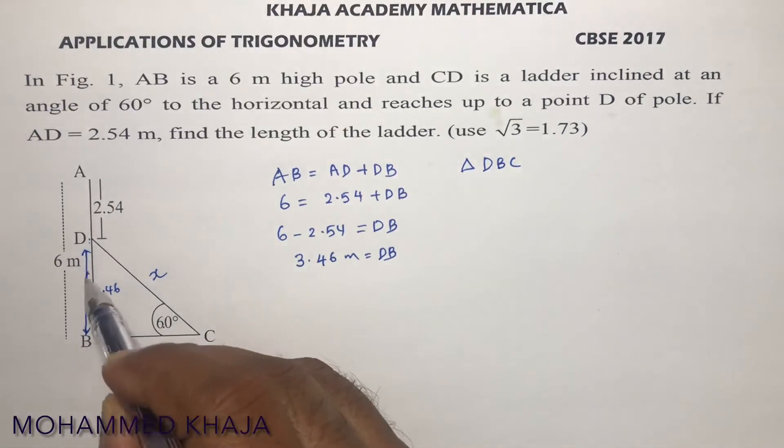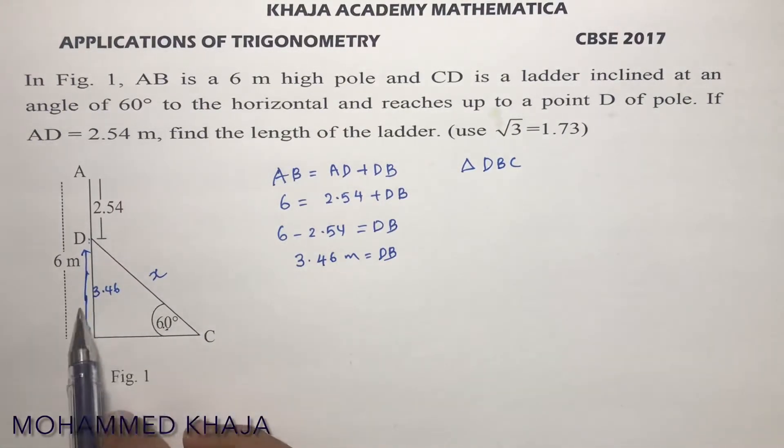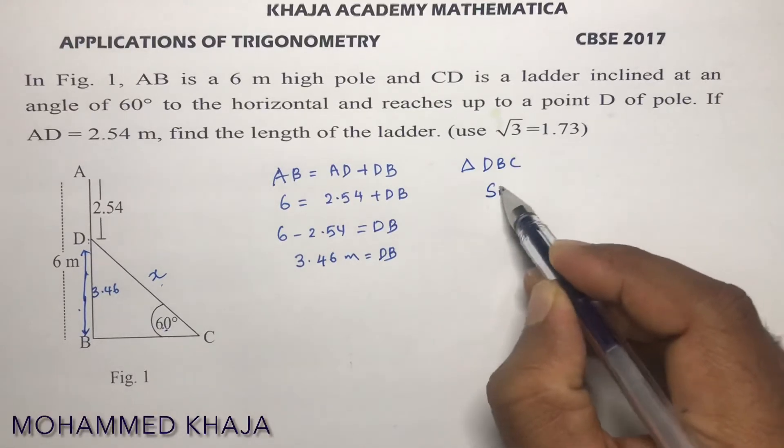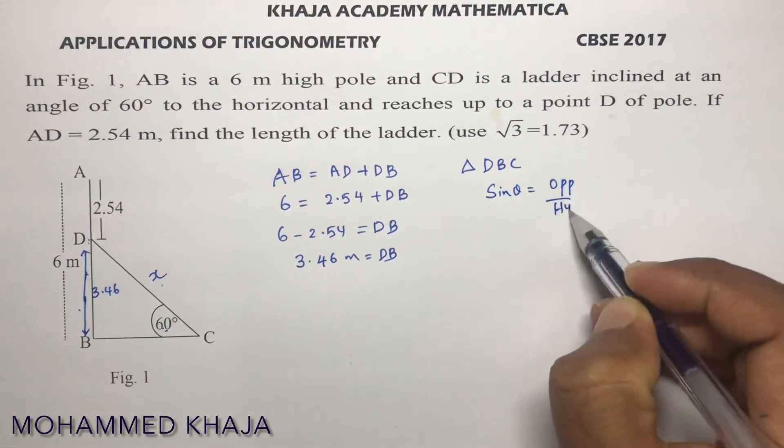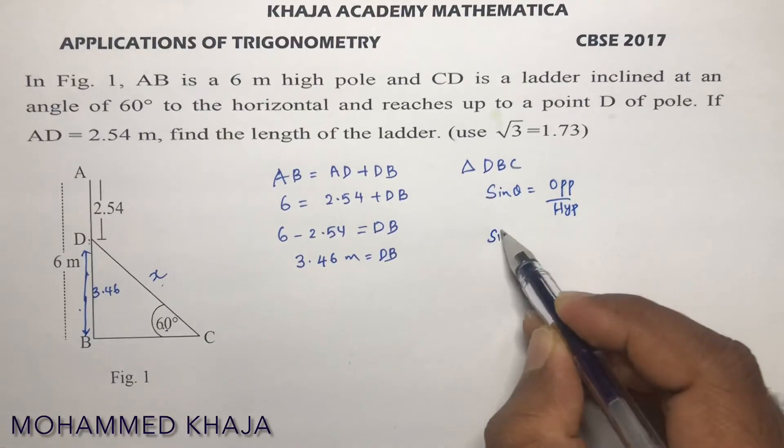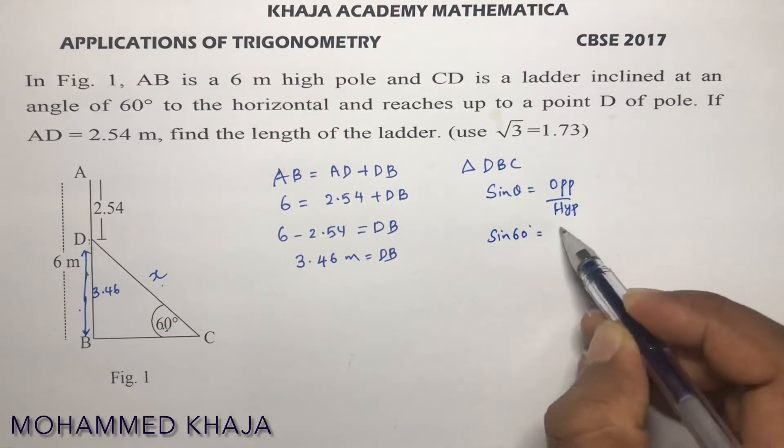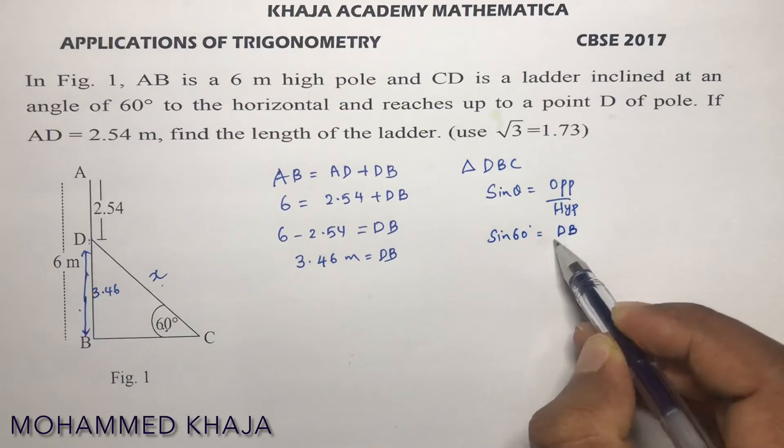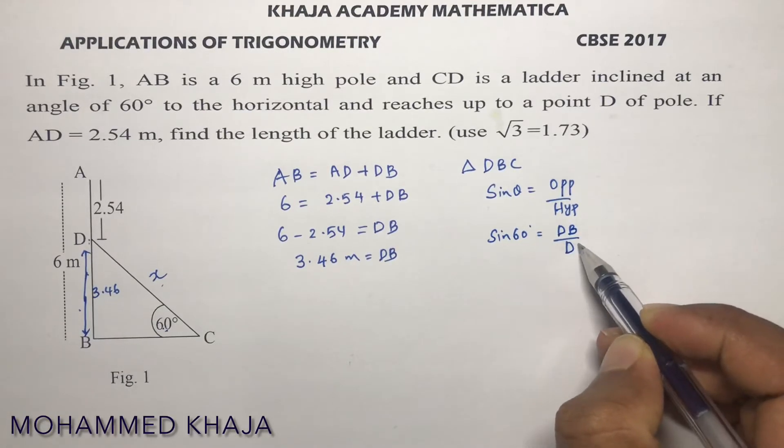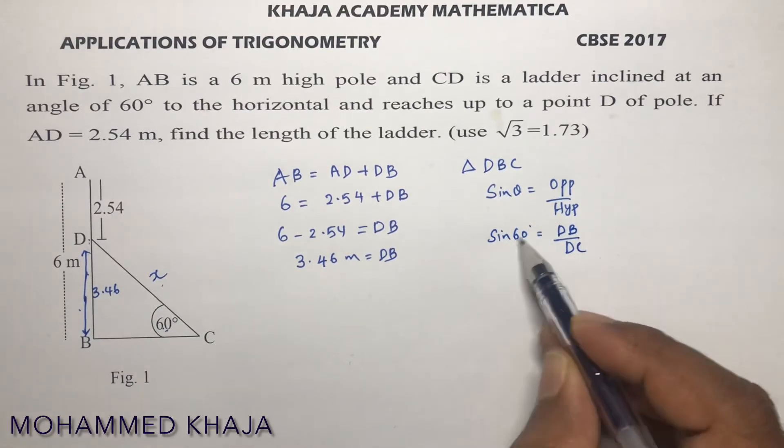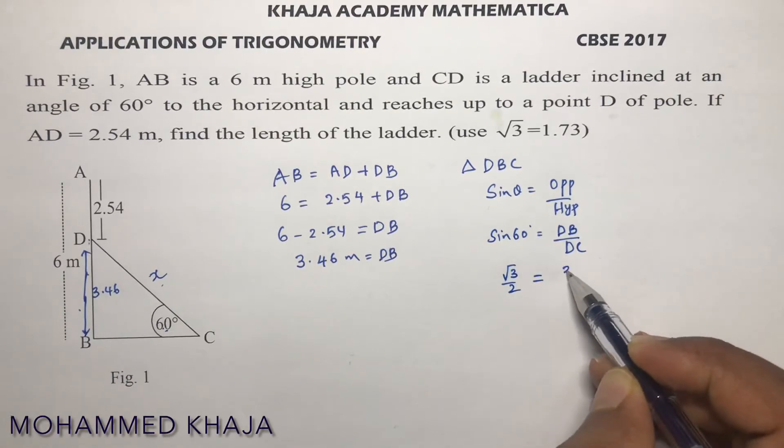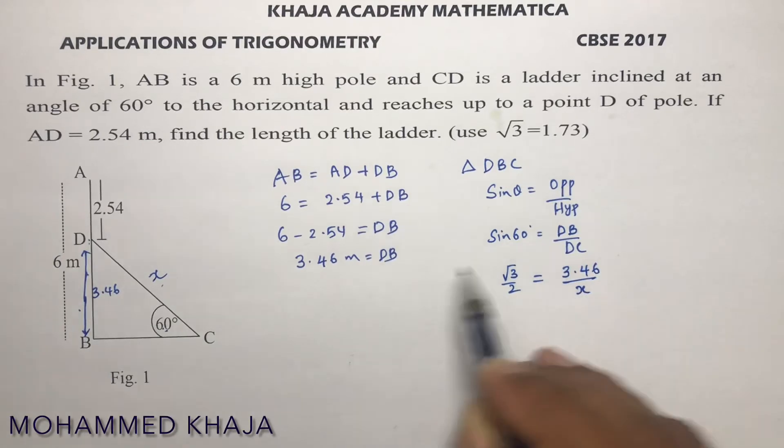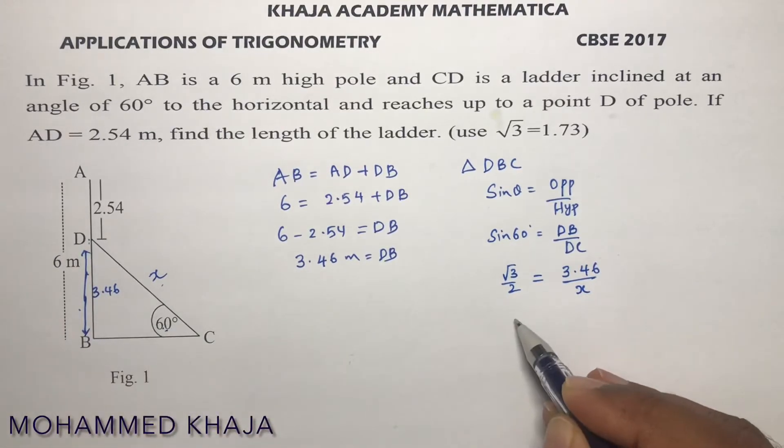So I will use sine theta, opposite by hypotenuse. Sine 60 degrees equals opposite DB over hypotenuse DC. Sine 60 is root 3 by 2, and DB is 3.46 by X, which is nothing but length of the ladder.